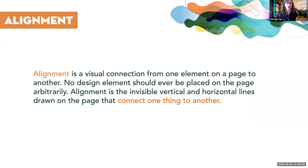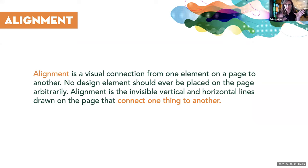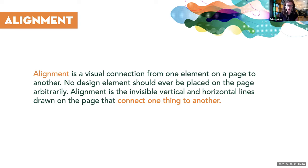Moving on to the A in our acronym: Alignment. Alignment is the visual connection from one element to another on a page — nothing should ever just be randomly placed. That doesn't mean designs can't have energy and fun; it just means everything should have some connection to each other. Alignment is achieved by having invisible horizontal or vertical lines that connect one thing to another.